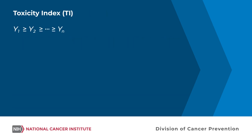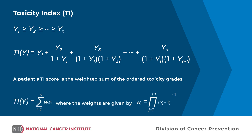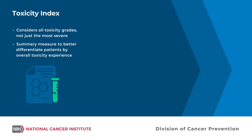The toxicity index for a patient is calculated by ordering the observed toxicity grades for a patient, denoted by the variable Y, from highest to lowest. Software is available in R or SAS to automate the process. The toxicity index accounts for all observed grades, not just the most severe.